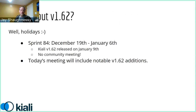Some people might be wondering what happened with version 1.62. The answer is holidays — we took a break. We did release version 1.62 on January 9th, the Monday after Sprint 84, so we basically just didn't do the community meeting. There wasn't a lot that went into that release, but it's in the release notes on Kiali.io, and we'll also talk about notable additions from 1.62 in today's meeting.